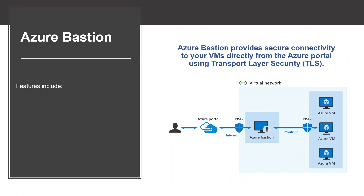In a traditional model, you will need to expose the Remote Desktop Protocol or RDP and SSH to the internet. These protocols can be used to gain remote access to your virtual machines. This process creates a significant attack surface that can be exploited by attackers.